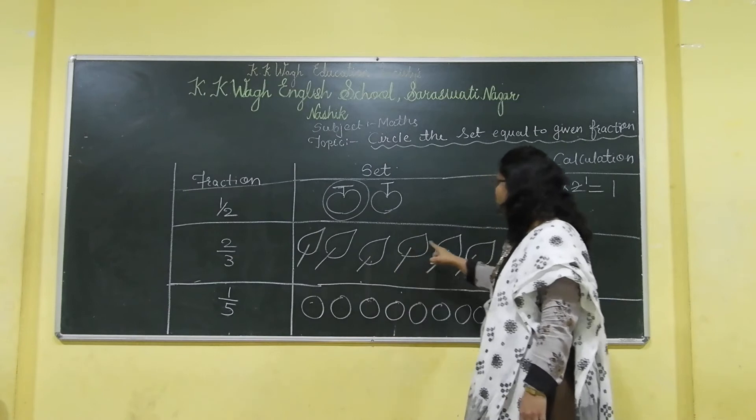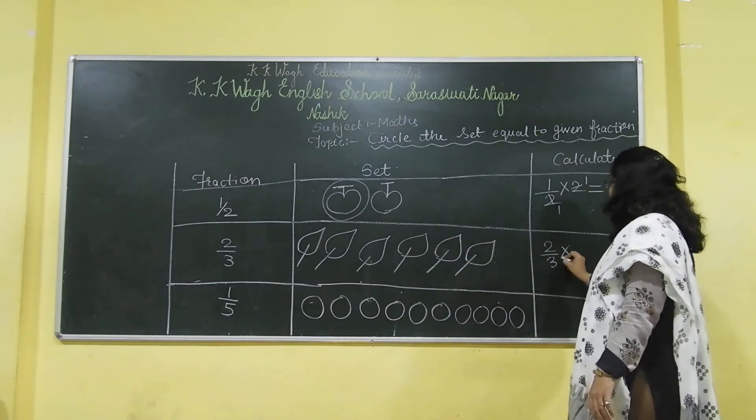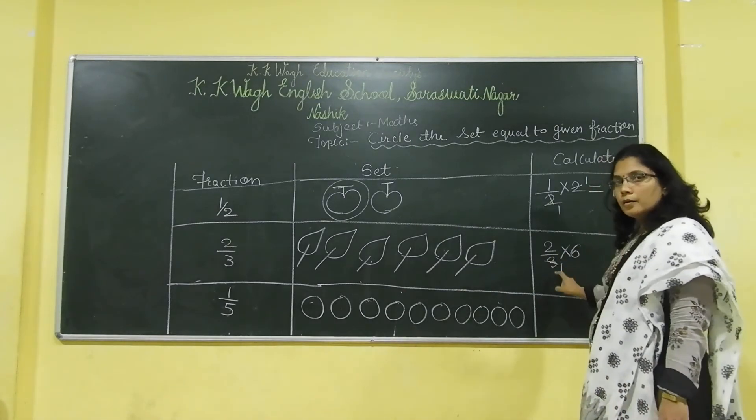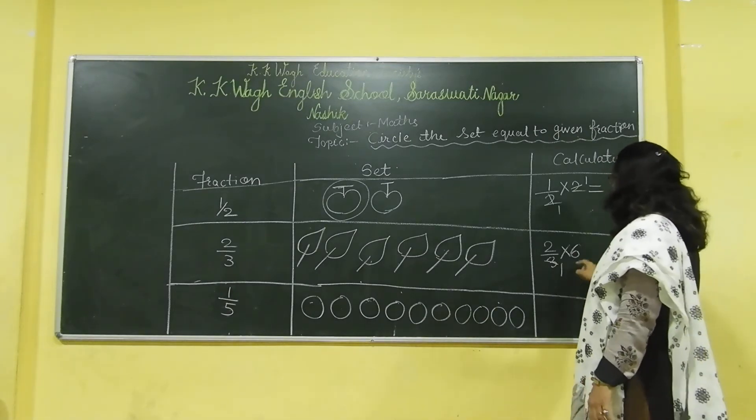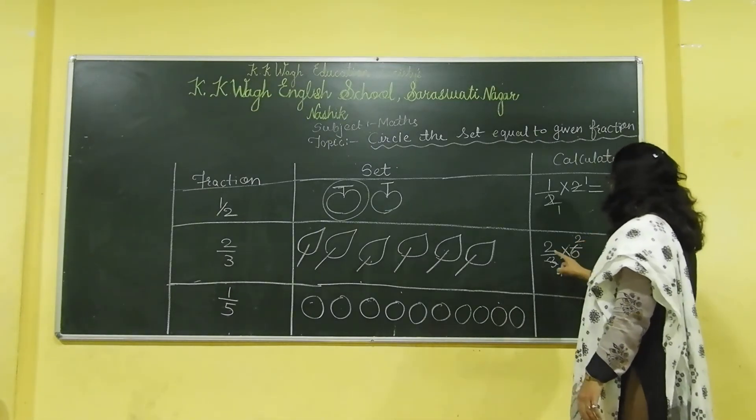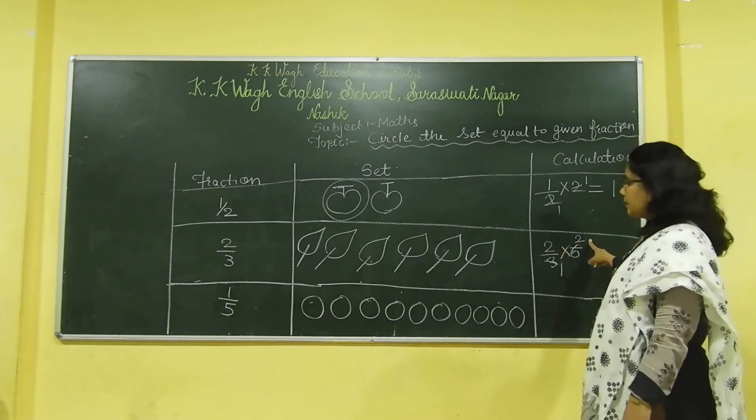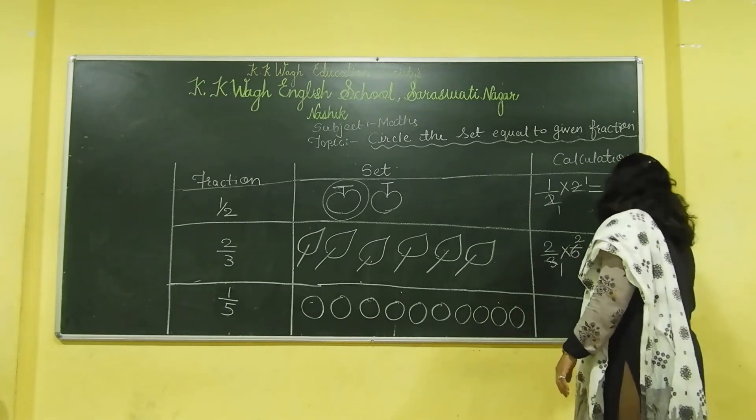You have to count the number of leaves here. 1, 2, 3, 4, 5, 6. There are 6. So, 2 upon 3 multiplied by 6. According to the rule, 3 1s are 3. 3 2s are 6. 2 into 2, 2 2s are 4. We got the answer 4.